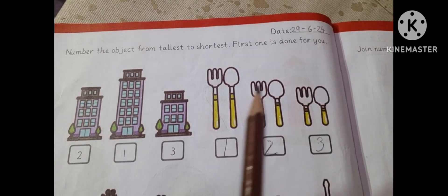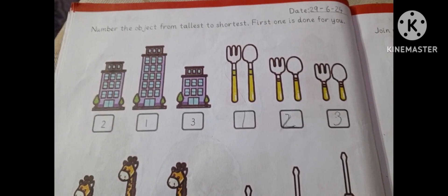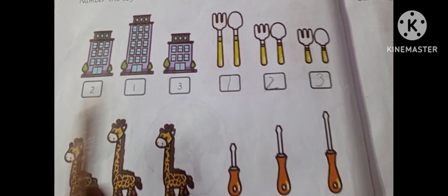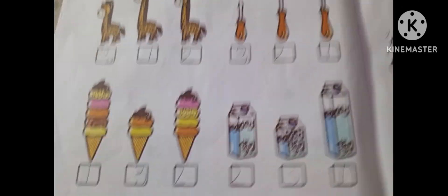Number the object from tallest to shortest. 1, 2, 3, 4. You have to take the number from tallest to the smallest. 1, 2 and 3. The most big and small.